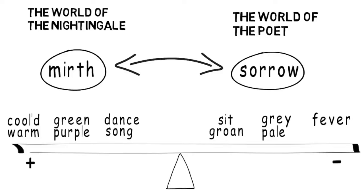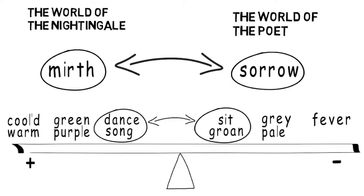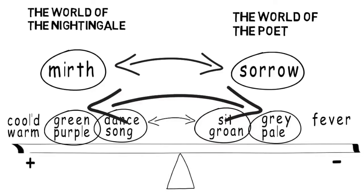Just as in the first stanza, we've got a number of very specific contrasts and oppositions going on here. The dance and song of the world of the nightingale contrasts specifically with the world of the poet, where men sit and hear each other groan. Equally, the world of the nightingale is a colourful world with its green and its purple, and this again sits in specific contrast with the world of the poet, which is grey and pale. As a final example, we could look at the temperatures in the two stanzas: in the world of the nightingale the wine is cooled and Keats talks of a beaker full of the warm south, whereas in the world of the poet we have the uncomfortable temperature — the fever.